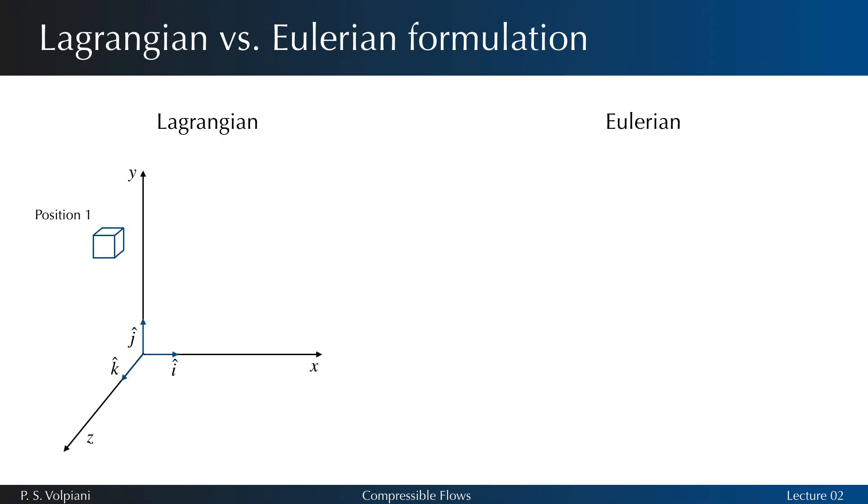In the Lagrangian specification of the flow field, the fluid parcel is followed as it moves through space and time. This can be visualized as sitting in a boat and drifting down a river.